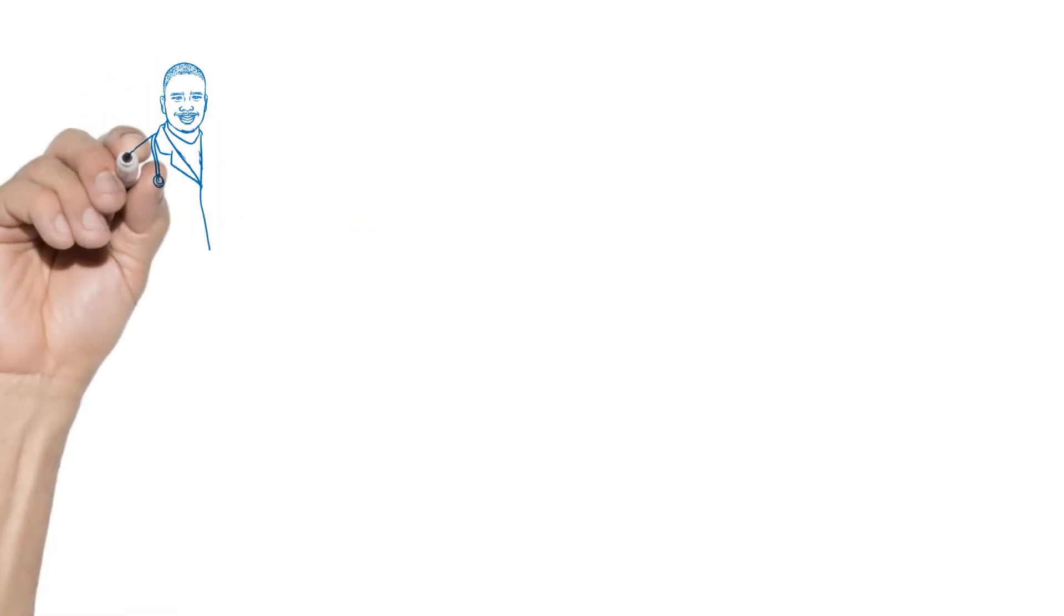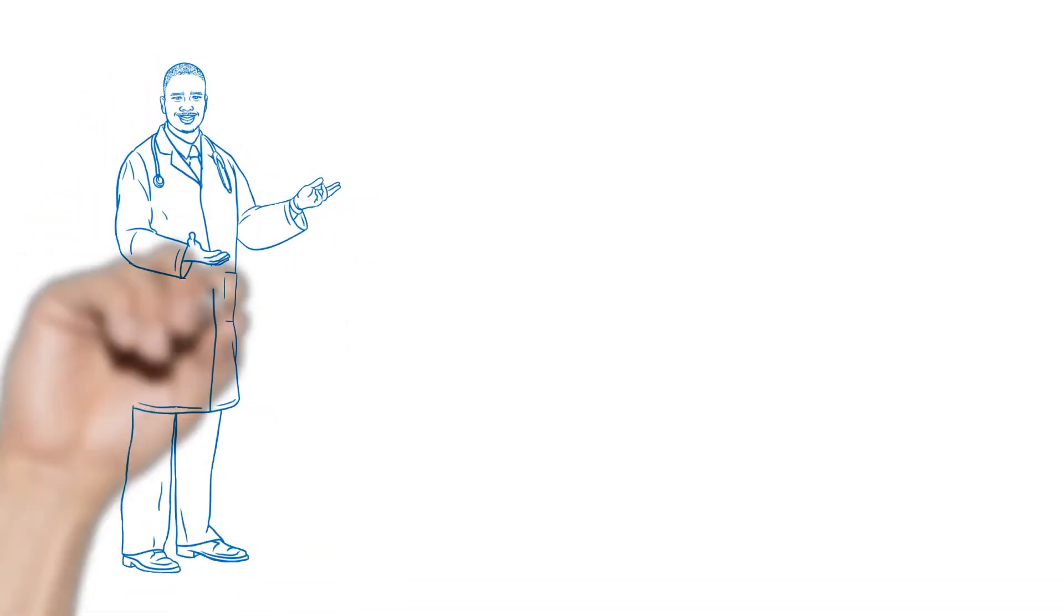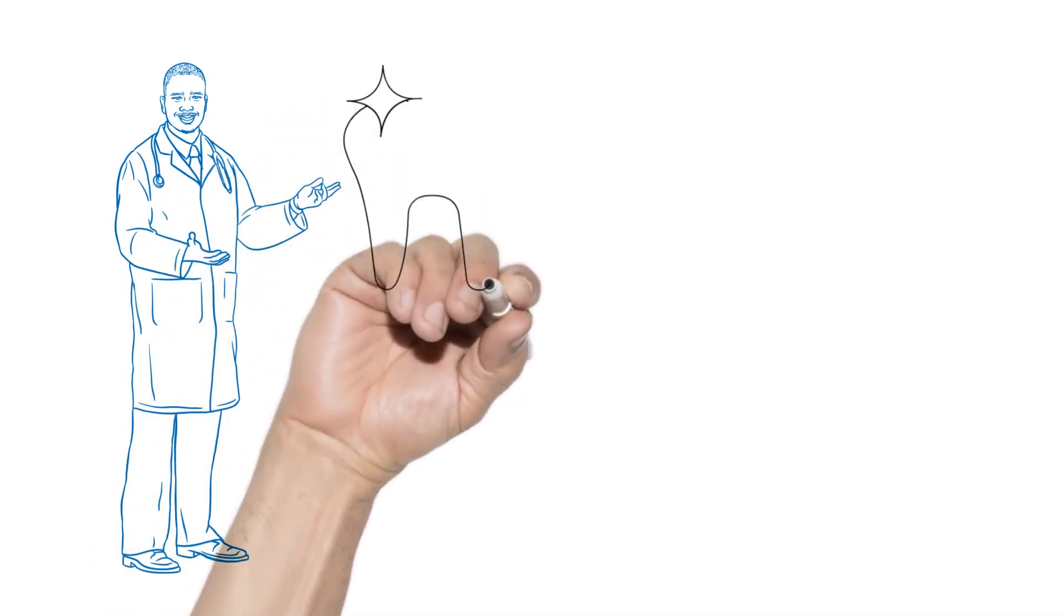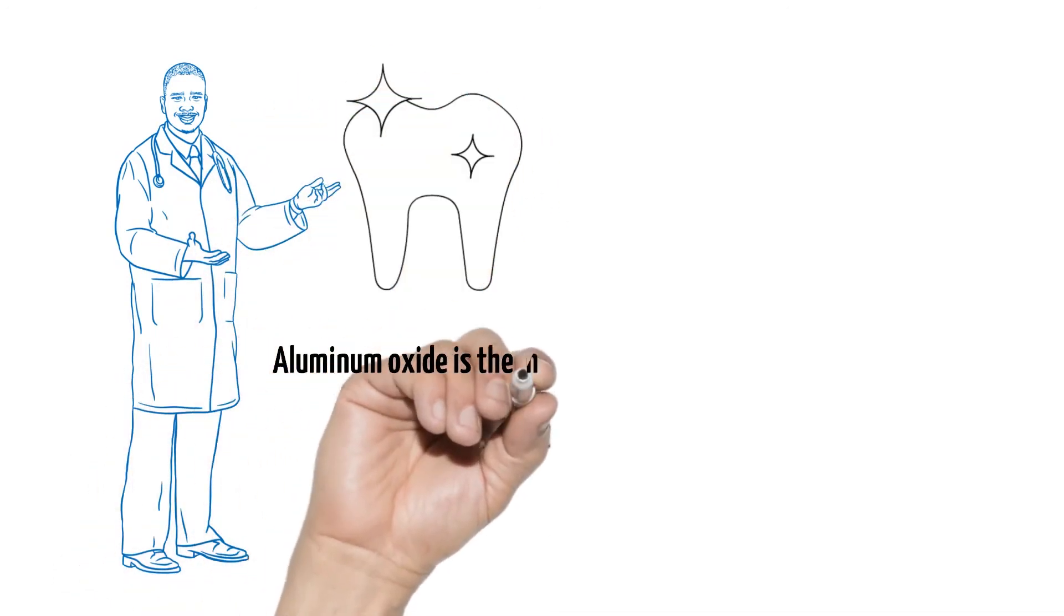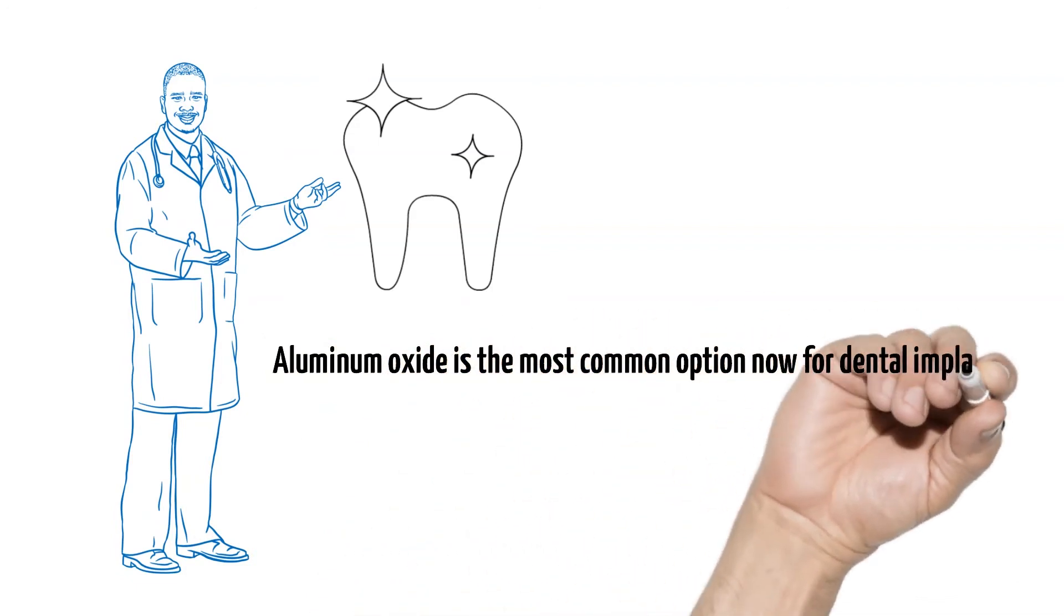In case you have any other concerns about aluminum oxide ceramic, consider how it is used in medicine. It is utilized in many implants and medical devices because it is safe and inert in the body while being durable enough to hold up over time. In modern dentistry, most dentists have replaced the use of toxic amalgam fillings with alumina and other durable ceramics. Aluminum oxide is the most common option now for dental implants.